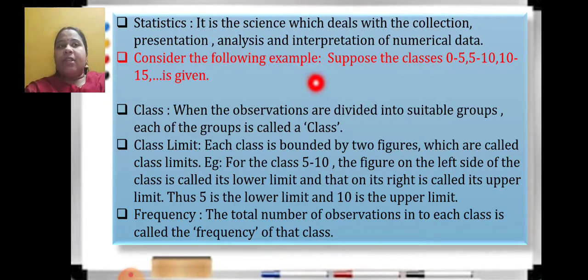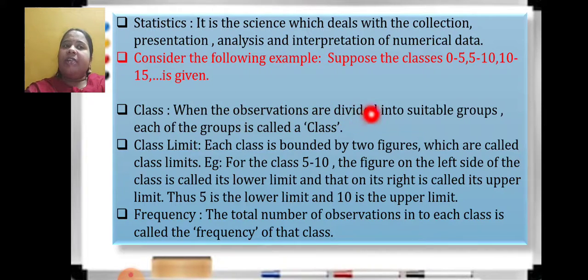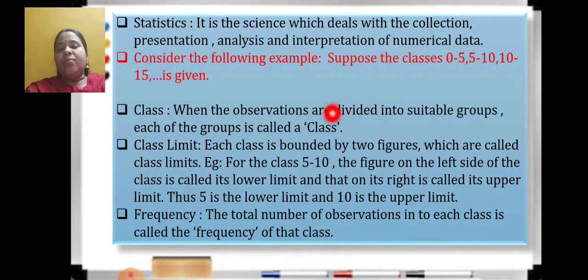Consider the following example. I have given you an example to explain the different terms we have already learned. Suppose the classes are from 0 to 5, 5 to 10, 10 to 15, etc. These are continuous classes. When the observations are divided into suitable groups — from 0 to 5 all will be included, 5 to 10 will be included — each such group is called a class.